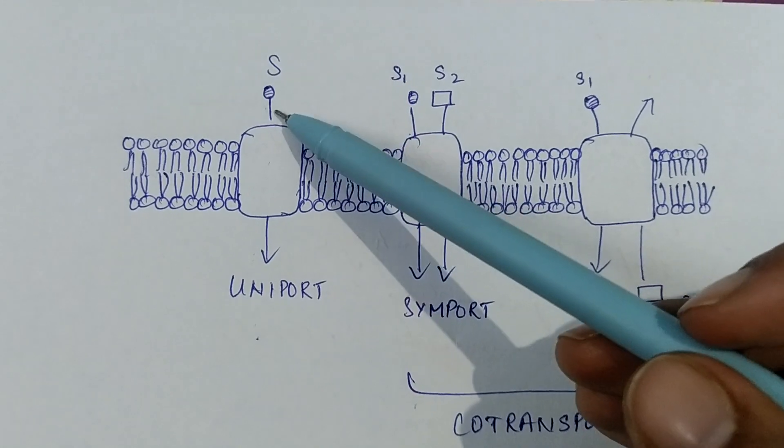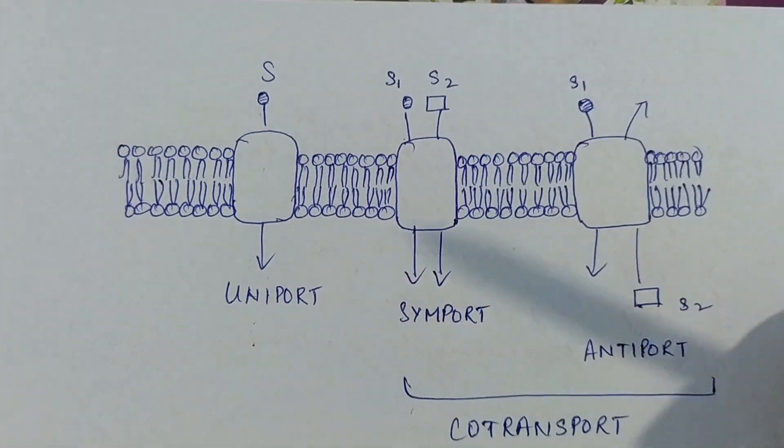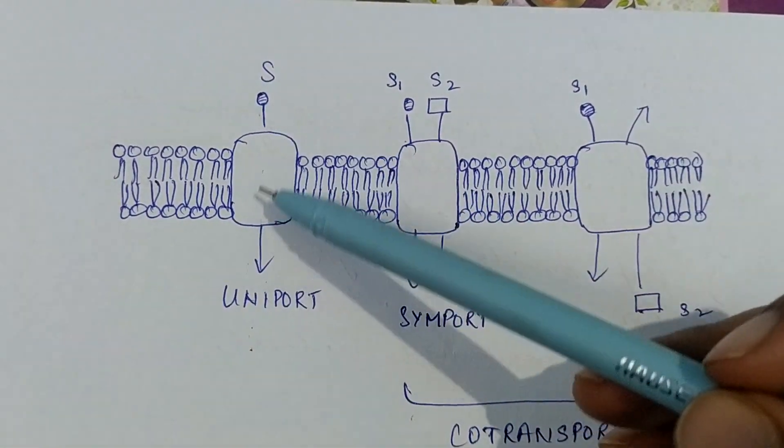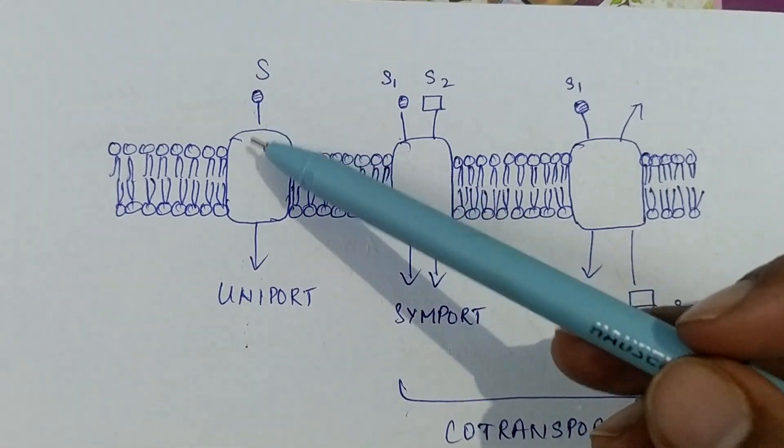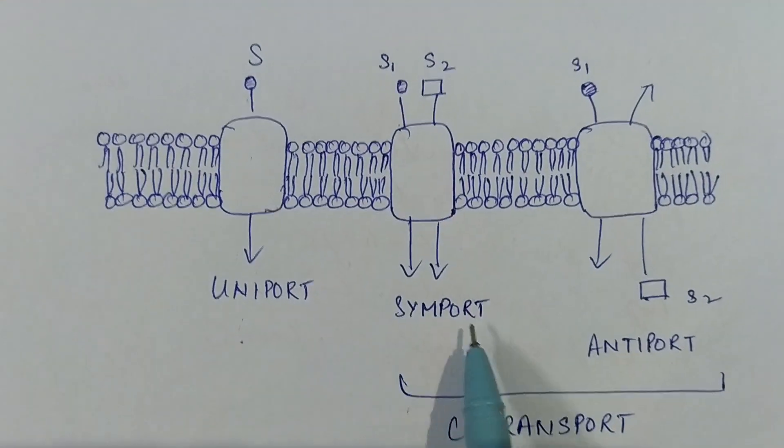So uni would mean one, single, and port is to transport. So this kind of transport occurs when a single molecule moves in a direction - that's uniport. And when we have two different molecules moving simultaneously, we call that co-transport.